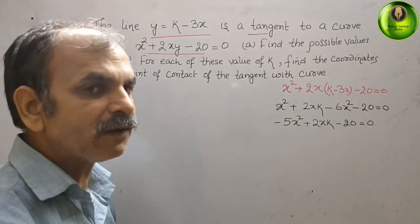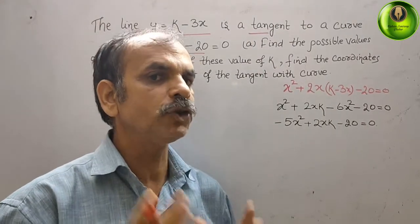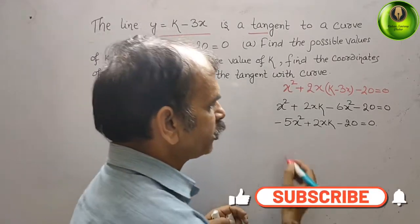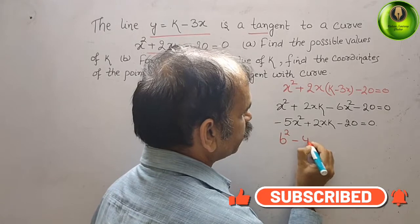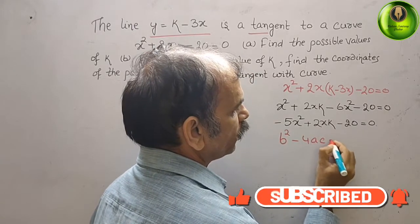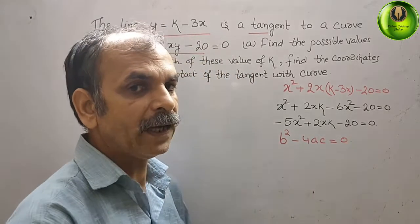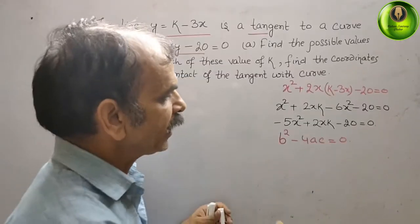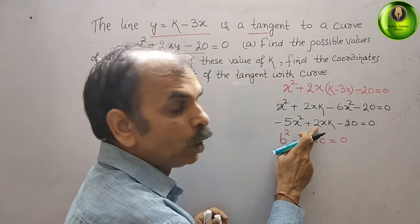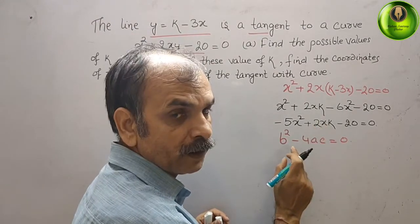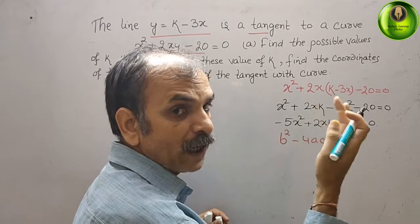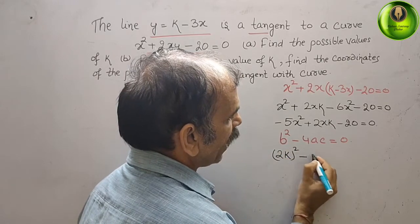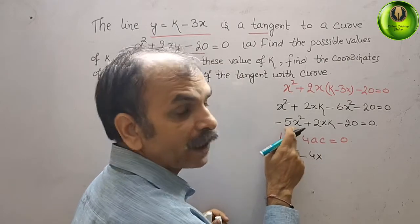Since it is a tangent, the discriminant must equal zero. The discriminant is b² - 4ac = 0. Comparing with -5x² + 2kx - 20 = 0, we identify a = -5, b = 2k, and c = -20.